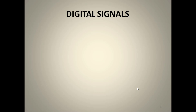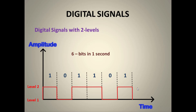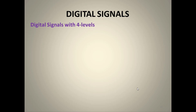Digital signals can have various levels. For a two-level digital signal representing data '1 0 1 1 0 1', a high voltage represents one and zero voltage represents zero. If six bits are transferred in one second, the bit rate is six bits per second.